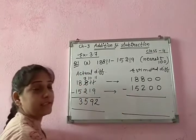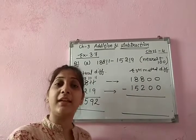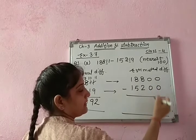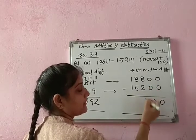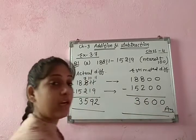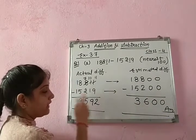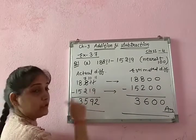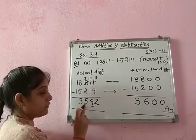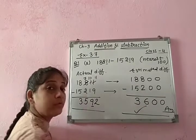Now subtract: 18,800 minus 15,200. 0 minus 0 is 0, 0 minus 0 is 0, 8 minus 2 is 6, 8 minus 5 is 3. So 3,600 is the estimated difference. You can verify: 3,592 rounded to the nearest 100 — since 9 is greater than 5, add 1 — gives 3,600. So I first find the actual difference, then the estimated difference.